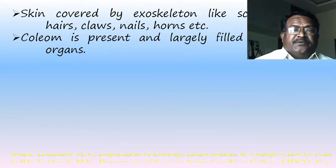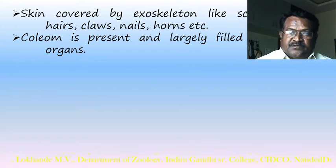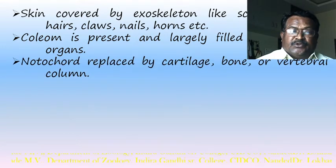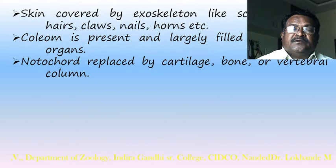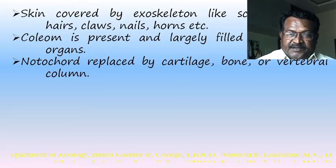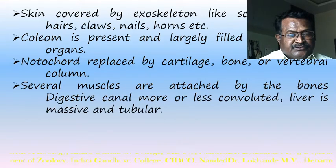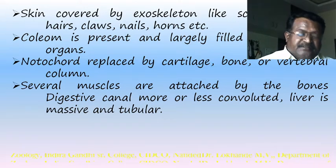All vertebrates are coelomate animals, with the coelom largely filled with visceral organs. The notochord is replaced by cartilage, bone, or the vertebral column. Muscles are attached to bones, and the digestive canal is well-developed with a massive liver.